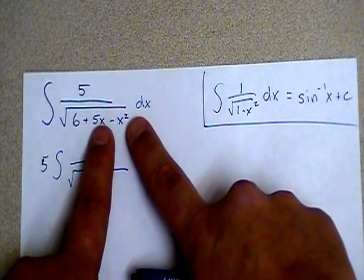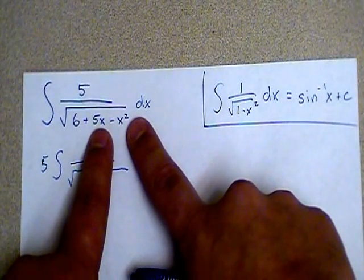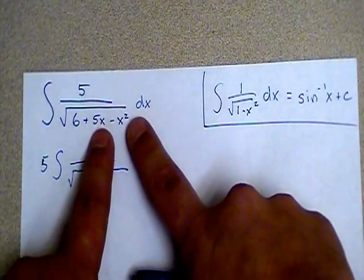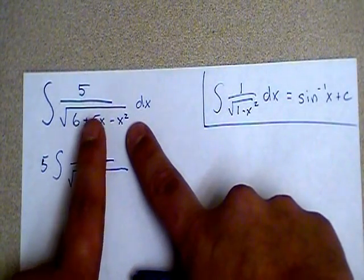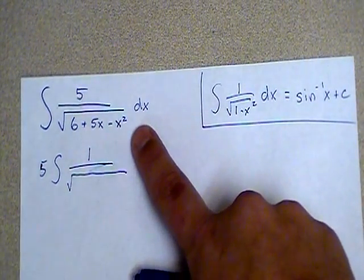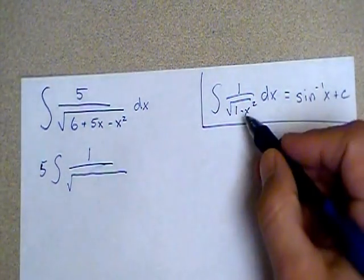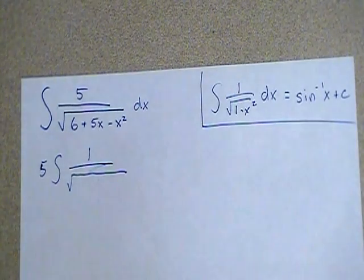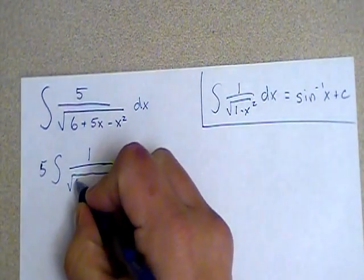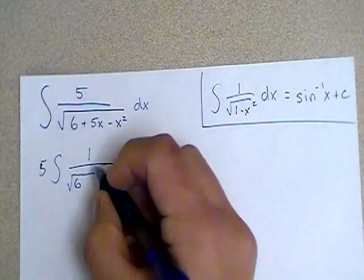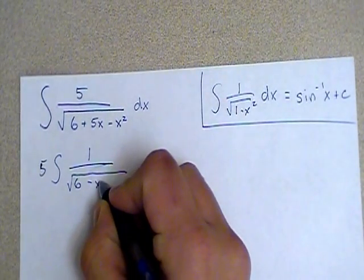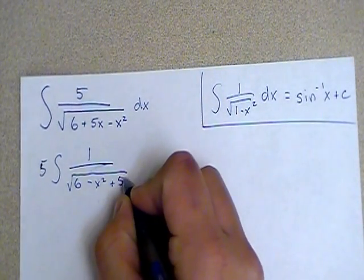If I can somehow complete the square with these two pieces to create one quantity being squared, rather than a difference of two separate things that have x's in them, I might get to the point where this formula up at the top of the page is actually useful. So I'm going to leave the 6b. I'm going to just switch the order of these around, so I'm going to put the minus x squared first and the plus 5x next.